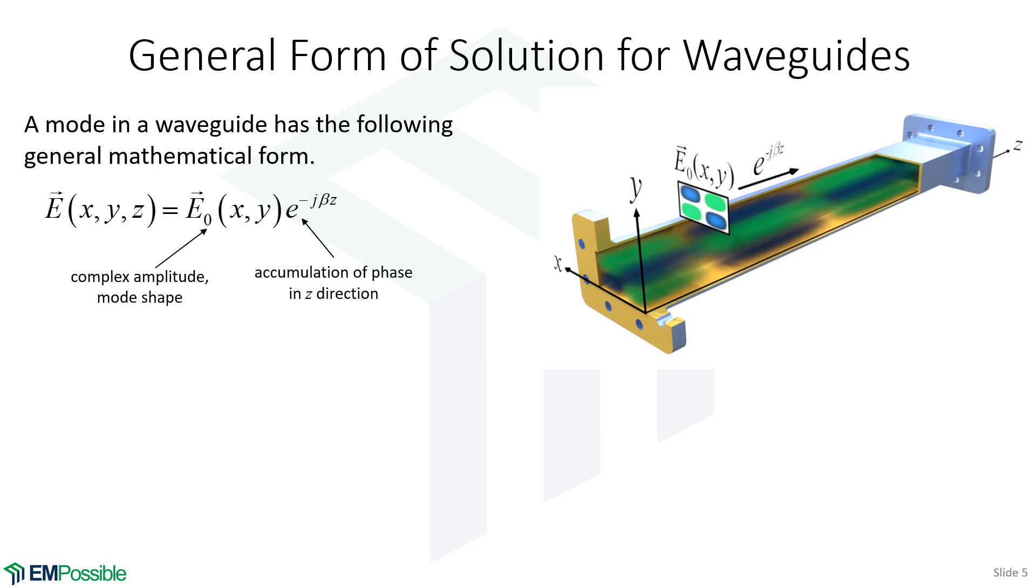Now let's discuss what the form of the solution looks like in a waveguide. On the right, I'm animating a waveguide. This is a rectangular metal waveguide. And I'm looking at one of the modes in here, it is not the first order mode.